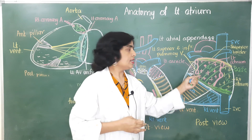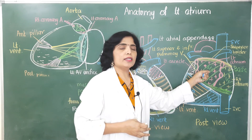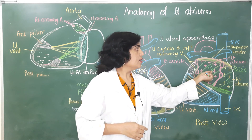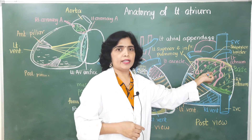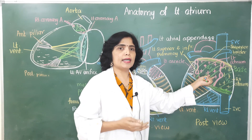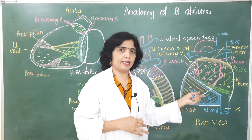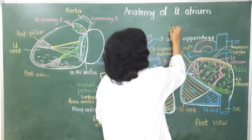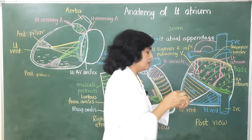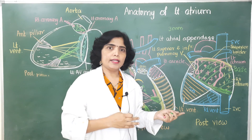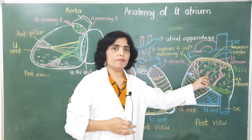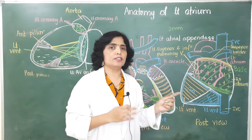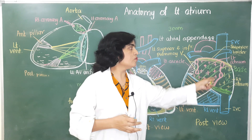To see the interior of the left atrium, we cut the posterior wall. The thickness of the wall of the left atrium is more than that of the right atrium, measuring about 3 mm. The interior of the left atrium, along with the posterior wall, appears smooth.